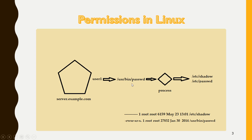That's why we apply setuid to the passwd command file. Now you can see there is a small 's' at the user end of the permissions. A small 's' indicates setuid. Now this file has setuid set. User1 tries to change the password using passwd, which has setuid. A process is initiated. This process now has the rights of the file's owner — which is root, with read, write, and executable permission. This is setuid.